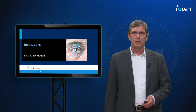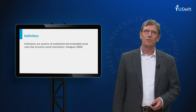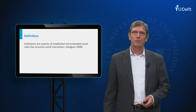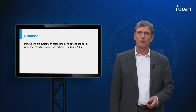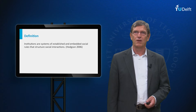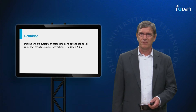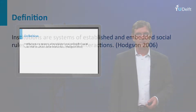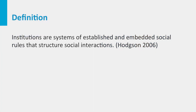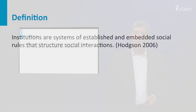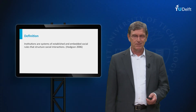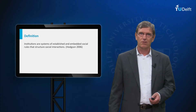To start with, I would like to give you a definition of what institutions are often referred to in literature. There are a lot of different definitions, and I find this definition of Jeff Hodgson from 2006 very important and interesting. He defines institutions as systems of established and embedded social rules that structure social interactions. So essentially institutions are social rules, and these social rules can be either established or embedded, and they are needed to structure these interactions.